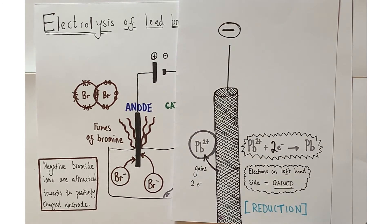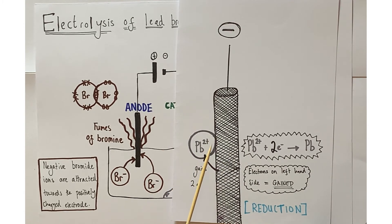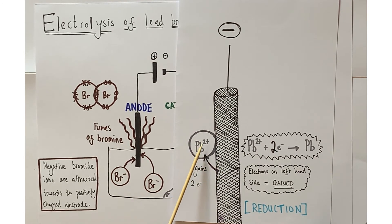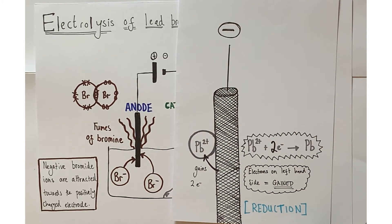Here is a zoom-in on the negative electrode — the cathode. The lead ion arrives at the cathode, and two electrons are pulled from the giant covalent structure of graphite onto the positive ion. The ion gains those electrons — and we call that process reduction. OIL RIG: reduction is the gain of electrons.